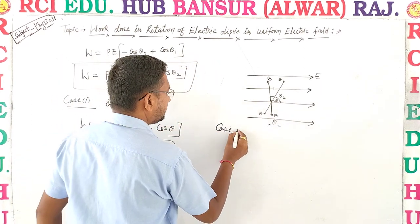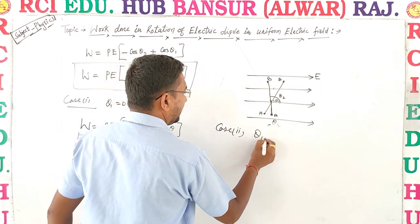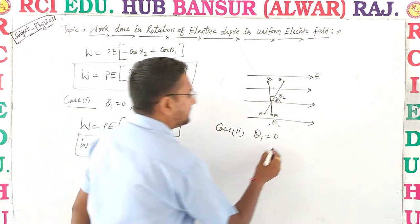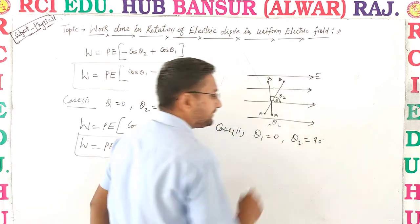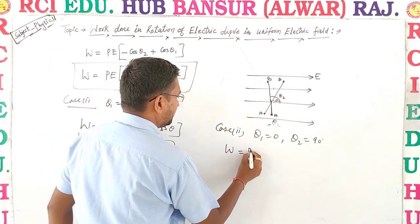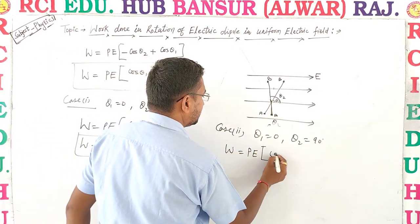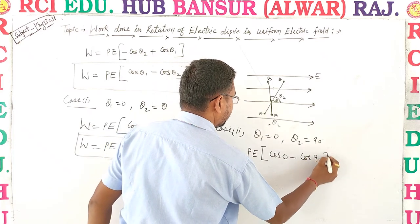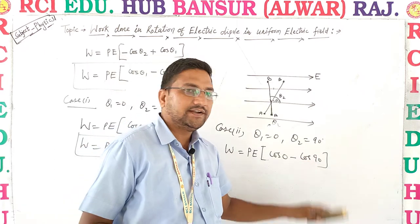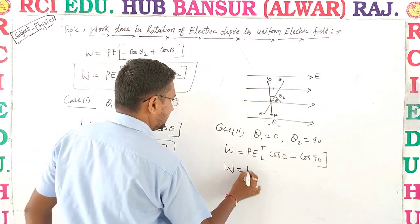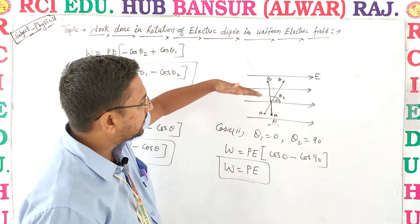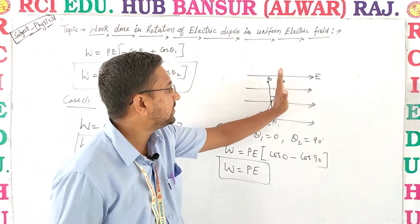Case 2: theta1 = 0 and theta2 = 90°. Substituting: W = pE(cos0 − cos90°) = pE(1 − 0) = pE. So when the dipole is rotated from parallel position to 90°, the work done is pE.